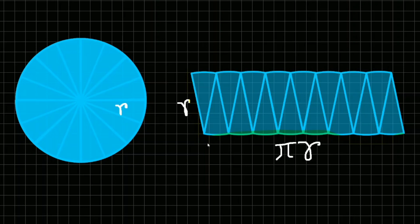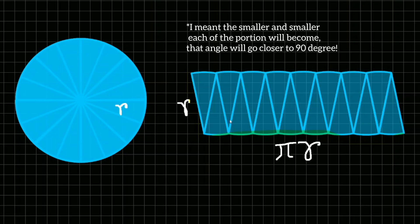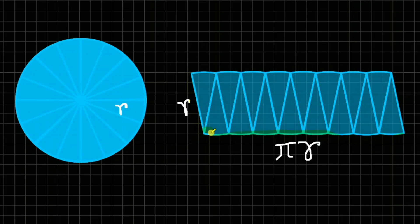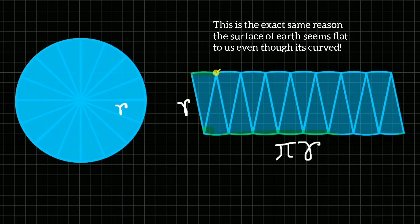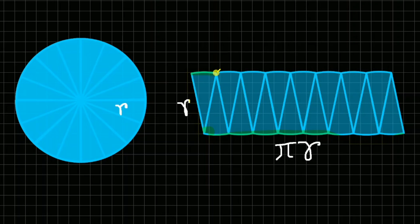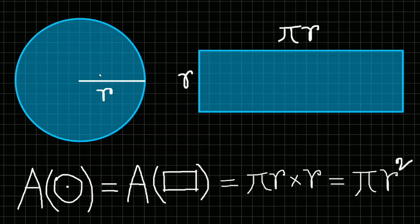What if I divide the circle into 32 equally different portions? What about 64? What about 128? The more we divide the circle into smaller portions, the reorganized object will look more like a rectangle — because the smaller portions will become smaller and smaller, and this angle will look more like 90 degrees, going closer and closer to 90 degrees, and this smaller segment will look more like a straight line. So if we divide the circle into infinitely many equal portions — which is practically impossible but theoretically valid — this object will be a perfect rectangle.